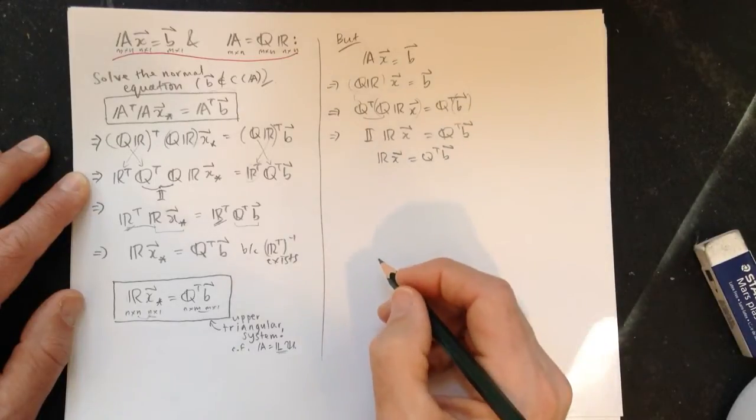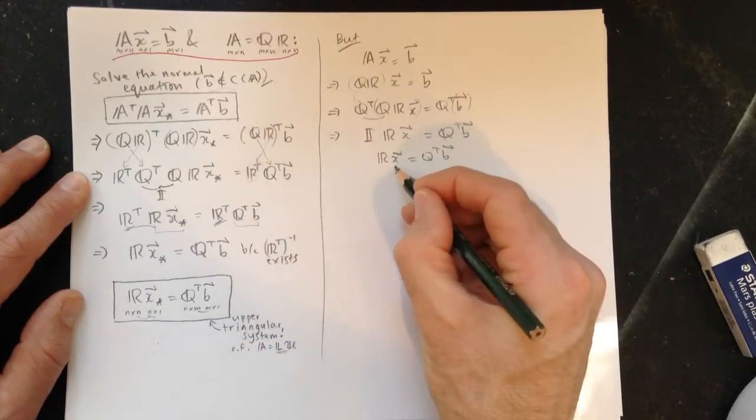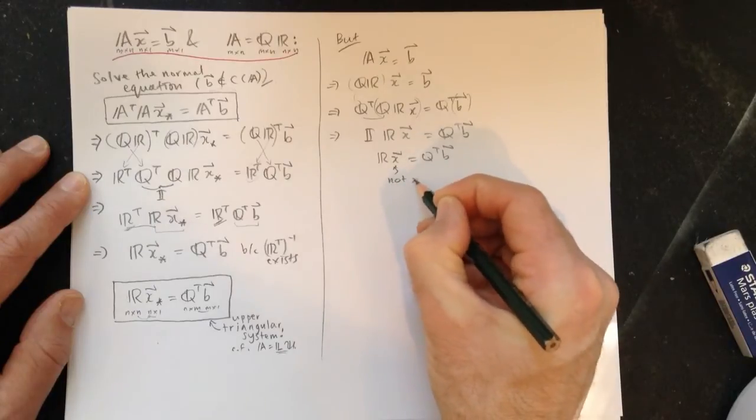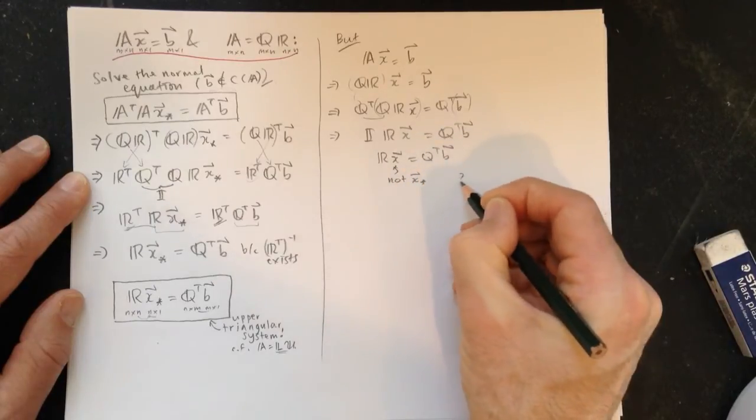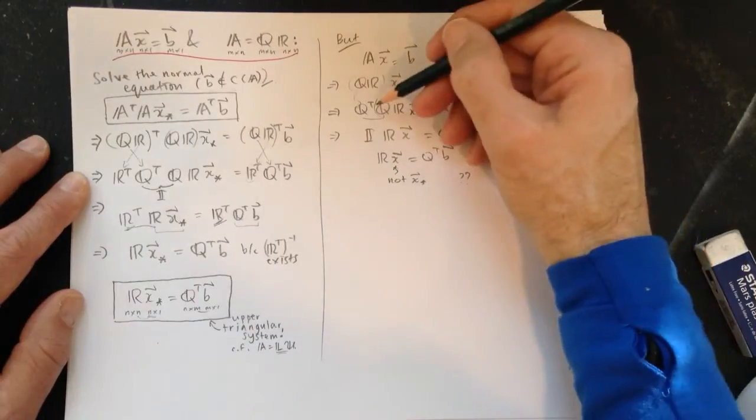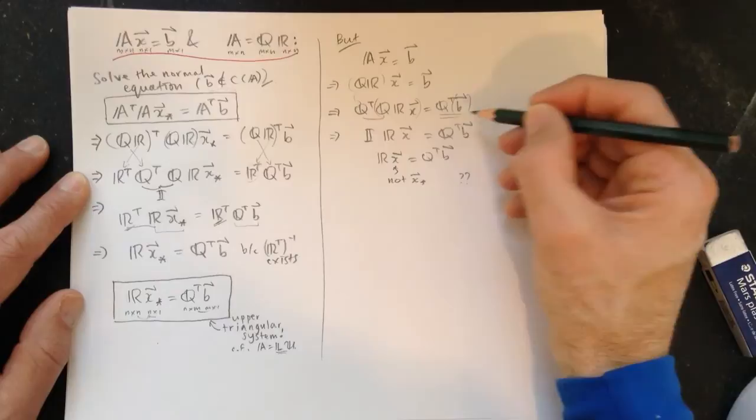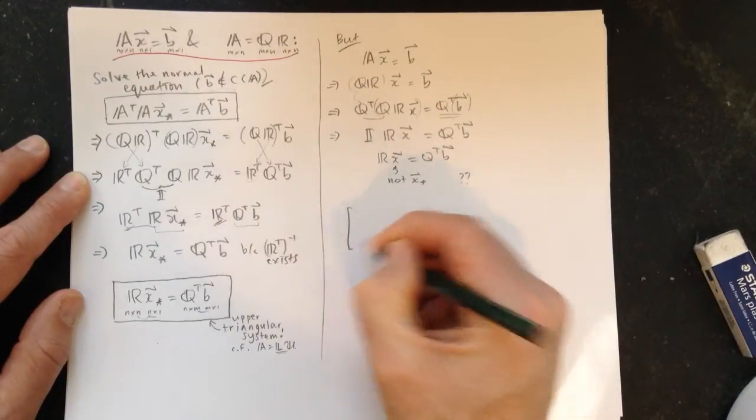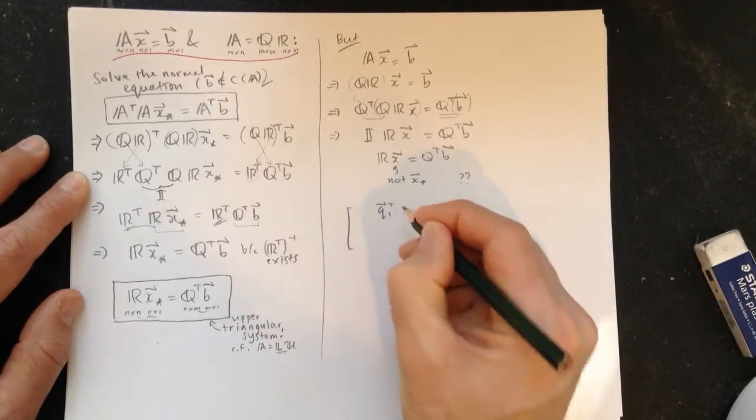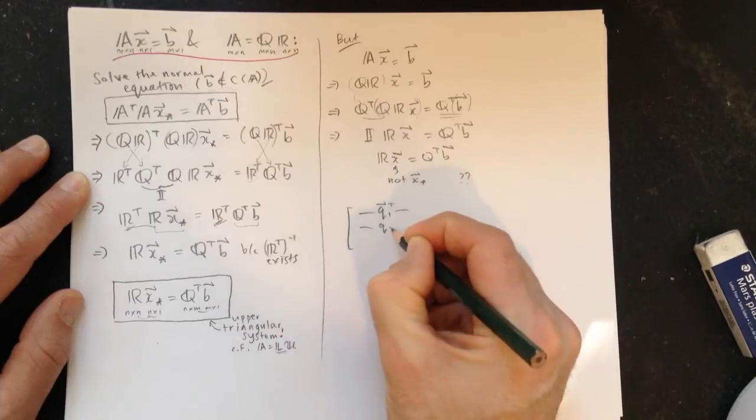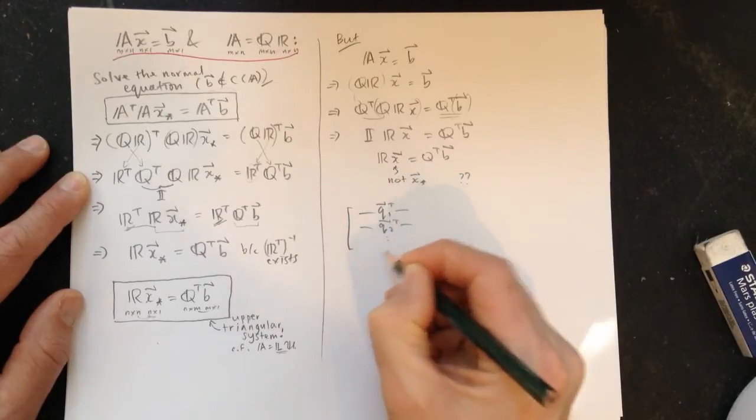Now, there's actually, there is a, there's a difference here. This is not X star. So what's going on? So actually, as we've multiplied by Q transpose, and you want to look at it on the right-hand side. So let's look at that. We have Q1 transpose, Q2 transpose, down, down, down. Q, N transpose, and these are actually unit vectors.